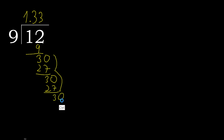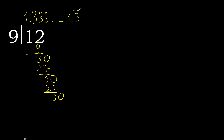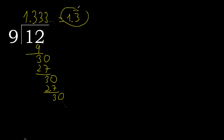Repeat — therefore repeat, repeat. Therefore 3 repeats. Ok, after the point, 3 repeats. Therefore, like this: 3 repeats. 12 divided by 9 is 1.3 repeating.